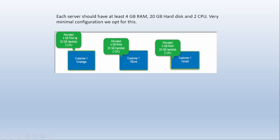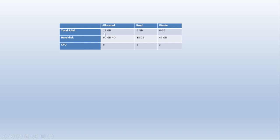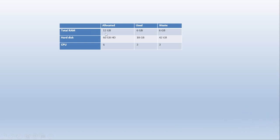From this picture we can see that we allocated 4GB RAM, 20GB hard disk, and two CPUs — the same for all three servers. However, they consume very few resources: the operating system plus application server consume only 2GB RAM, 6GB hard disk, and one CPU throughout the year. This means we allocated 12GB RAM but only used 6GB — 6GB RAM is totally wasted even though we paid for 12GB. Similarly, for hard disk, 60GB was allocated but only 18GB used, wasting 42GB throughout the year, and half the CPU is also wasted.